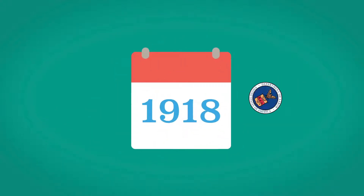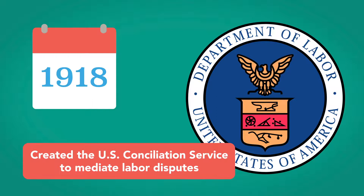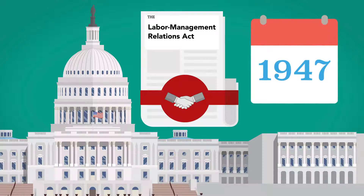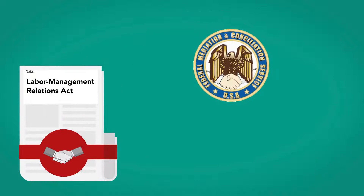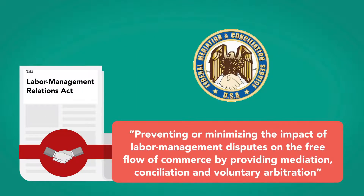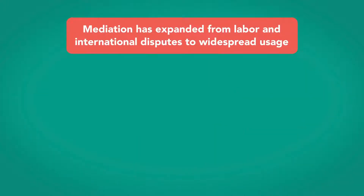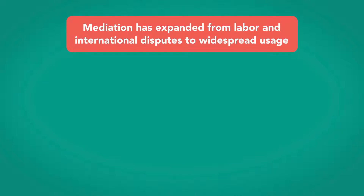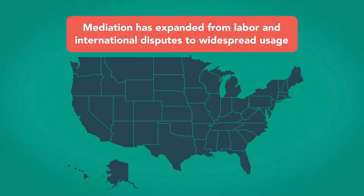In 1918, the U.S. Department of Labor created the U.S. Conciliation Service to mediate labor disputes. In 1947, Congress enacted the Labor Management Relations Act, also called the Taft-Hartley Act. It included the Federal Mediation and Conciliation Service as an independent agency with the mission of preventing or minimizing the impact of labor management disputes on the free flow of commerce by providing mediation, conciliation, and voluntary arbitration. Since then, mediation has expanded from labor and international disputes to widespread usage in state and local court systems for all types of large and small disputes.